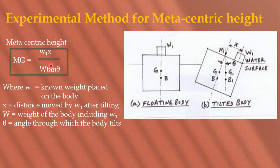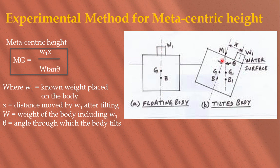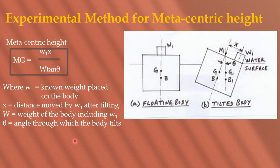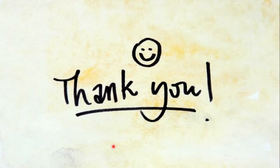The body starts oscillating back, giving you the meta center M. The meta centric height formula for the experimental method is: GM = w1 · x / (W · tan θ), where w1 is the known weight placed on the body, x is the distance by which the known weight got displaced, W is the total weight of the complete body including w1, and θ is the angle of tilt.